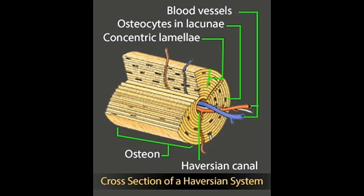Though the Haversian canals are named after Clopton Havers, as he described them in detail, a Dutch scientist named Antony van Leeuwenhoek (1678) was the first person to notice the microscopic canal system in bones. Given below is a labeled diagram to help you understand the structure of compact long bones, as well as the microscopic structure or histology of the Haversian system of compact bones.